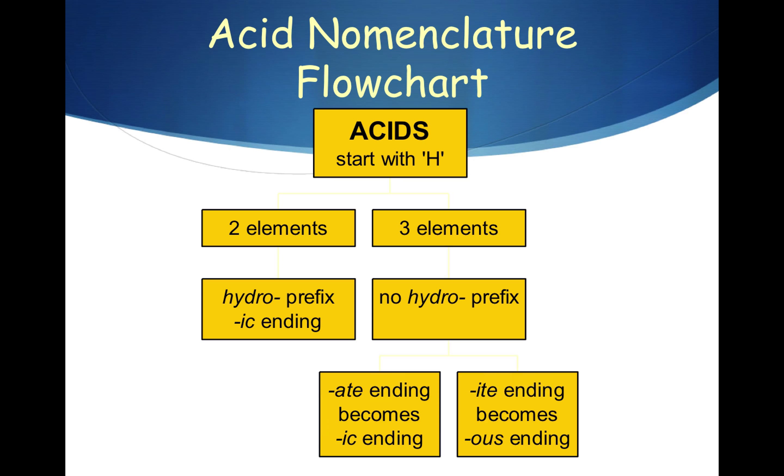Now, if the negative ion ends in -ite, -ite becomes -ous. So those acids would be nitrous acid, sulfurous acid.